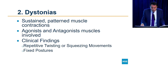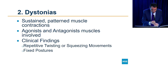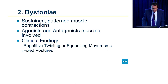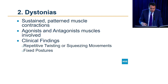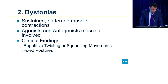We don't know exactly why dystonias occur. We believe some of them are genetic, some could be due to stroke or another brain lesion, and most of them, frankly, occur for reasons we never know.